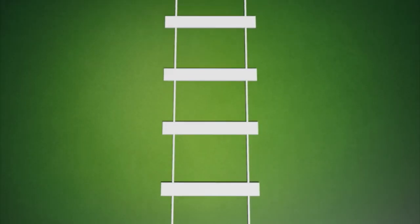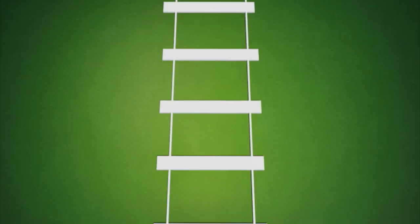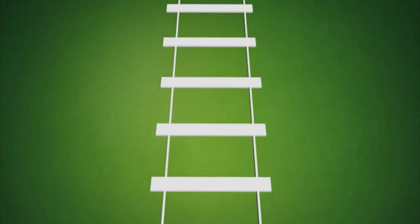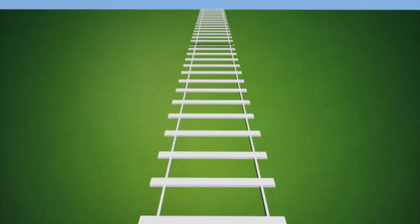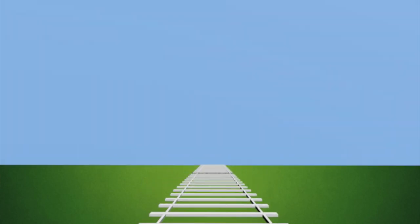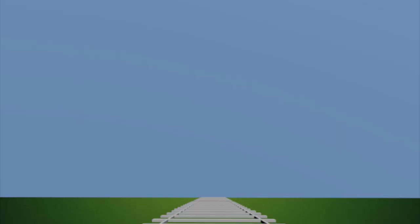It looks like we have our answer. Consider this idea, though. If we view a set of railroad tracks from above, we see that the rails are parallel. However, if you stand on the tracks and look off into the distance, it looks like those rails meet.